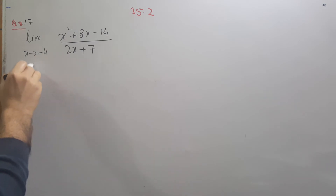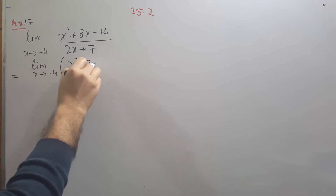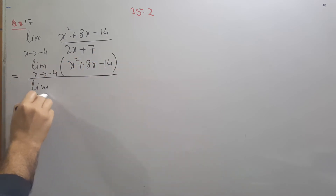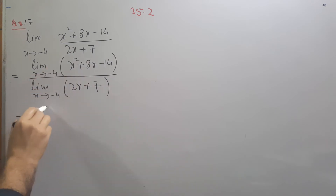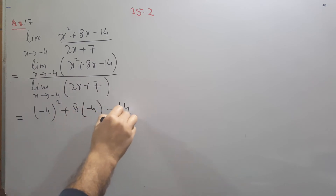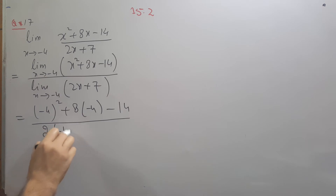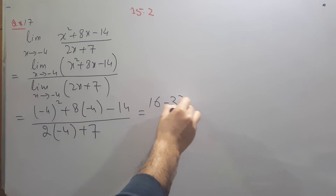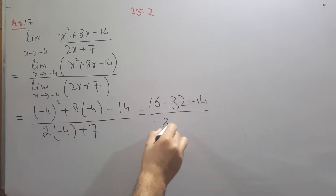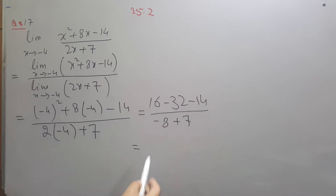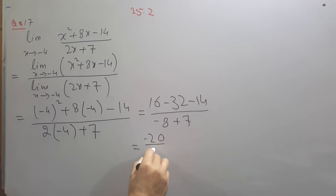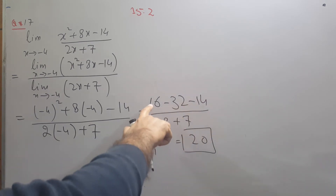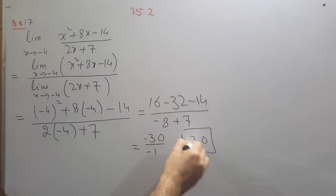Question number 17: again apply the limit on the numerator and denominator separately. Substituting x equals minus 4: in the numerator we get (minus 4) squared minus 8 times (minus 4) minus 14, which is 16 plus 32 minus 14 equals 34. In the denominator: 2 times (minus 4) plus 7 equals minus 8 plus 7 equals minus 1. Simplifying gives minus 34 over minus 1 equals 34, or the result is 30.